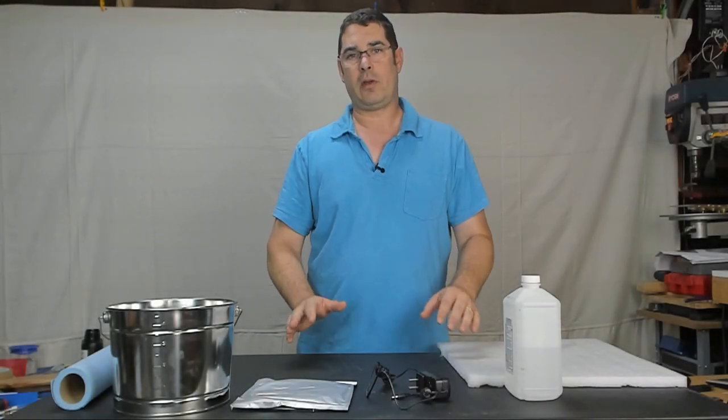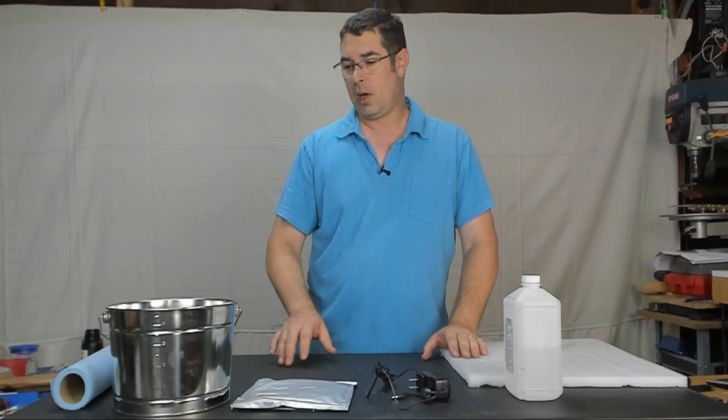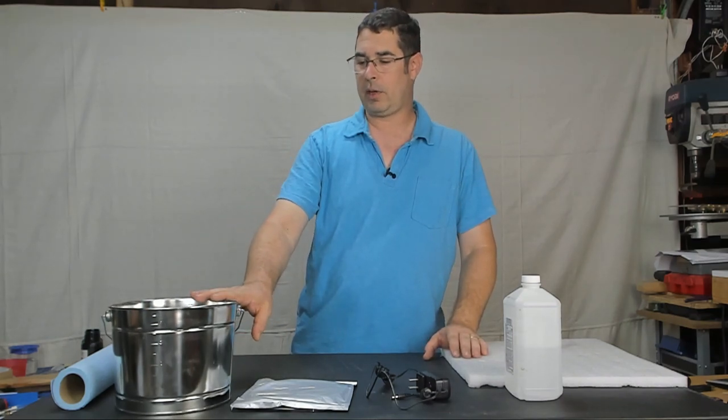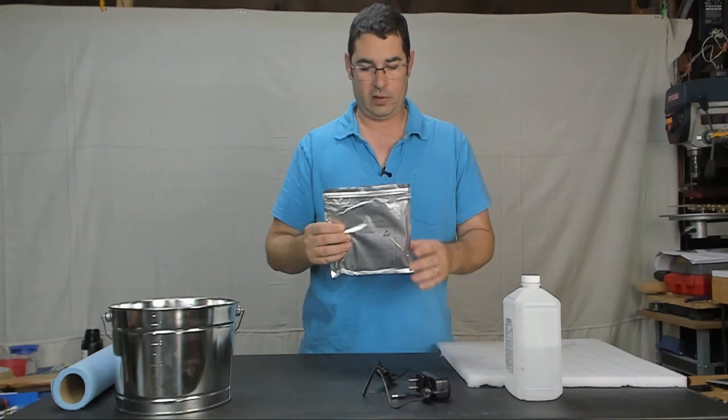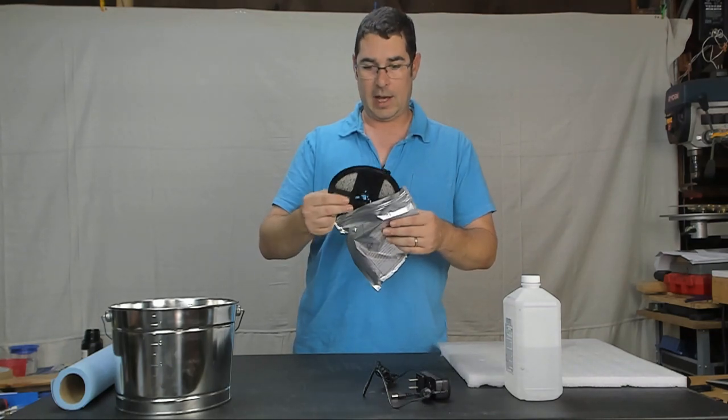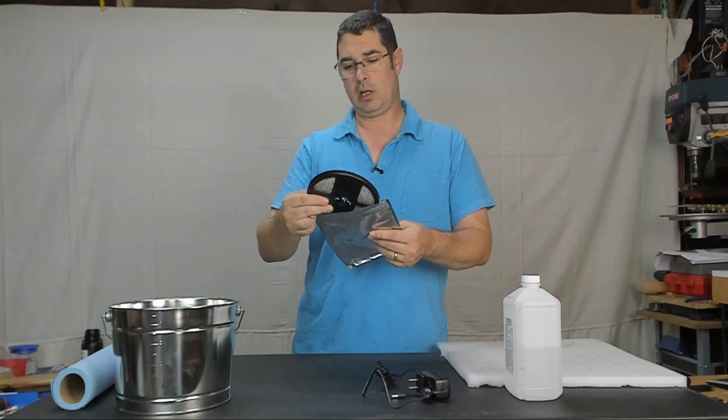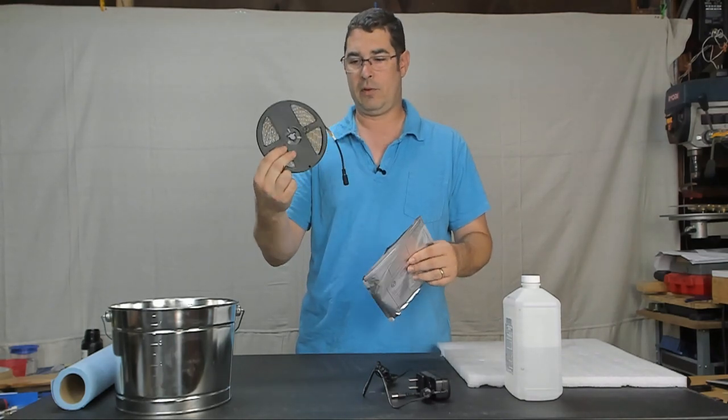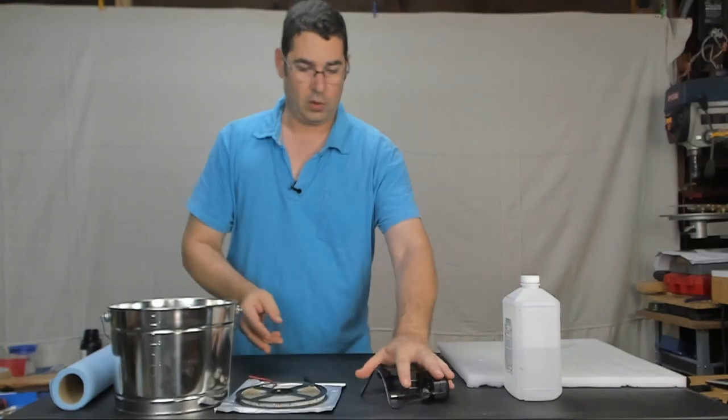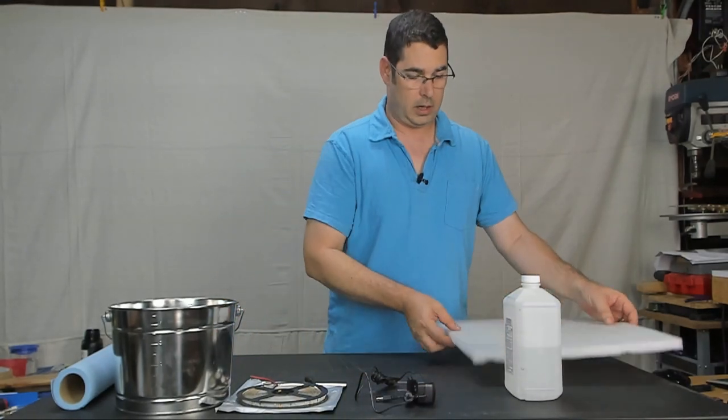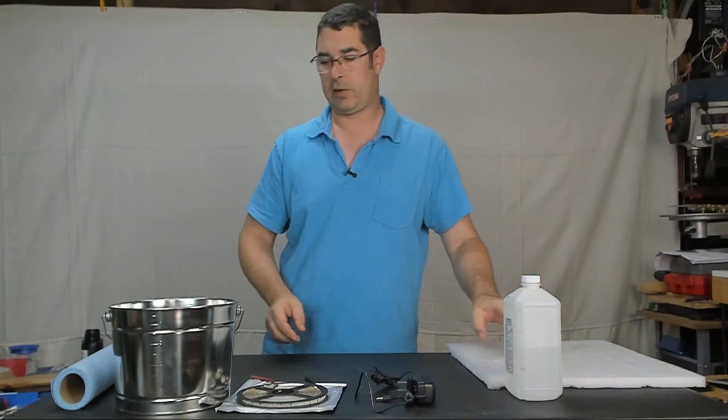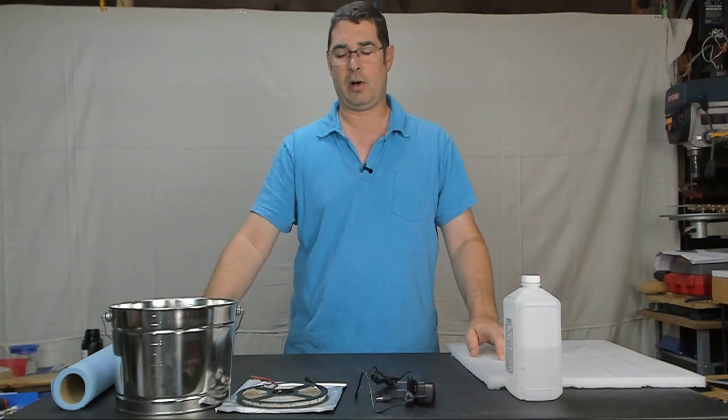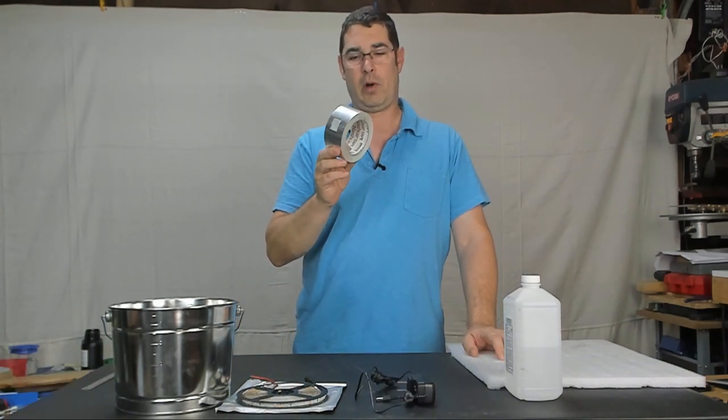For our project today, we're going to keep this down, dirty, and simple. What we're going to use is a 5-quart metal pail that I picked up at Home Depot for about $5. We're going to use some UV LEDs that I picked up off of Amazon, and I've included a link down below if you'd like to pick some of these up for yourself. Of course, a power supply to drive those. A piece of foam recycled out of one of the boxes. And a roll of foil tape, and the paper towels.